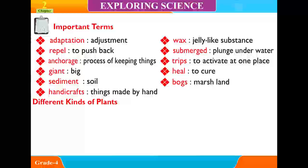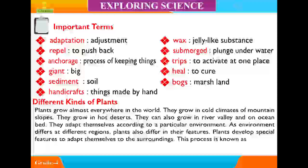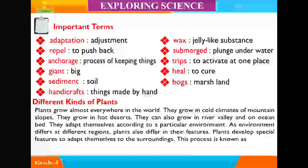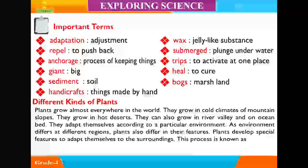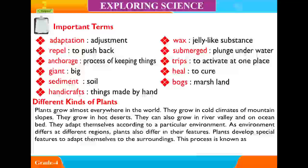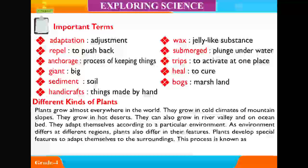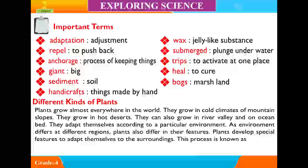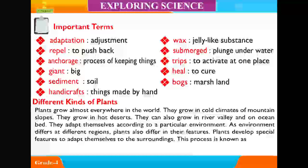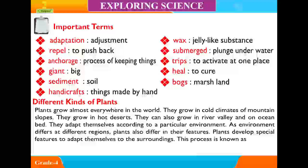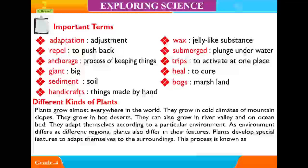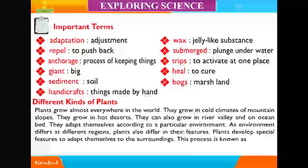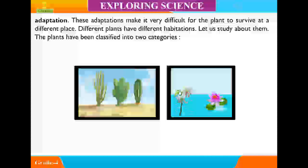Different Kinds of Plants. Plants grow almost everywhere in the world. They grow on cold mountain slopes, in hot deserts, and in river valleys and on ocean beds. They adapt themselves according to a particular environment. As environment differs at different regions, plants also differ in their features. Plants develop special features to adapt themselves to the surroundings. This process is known as adaptation.